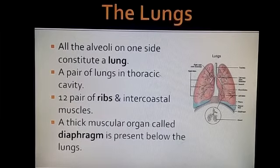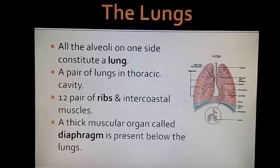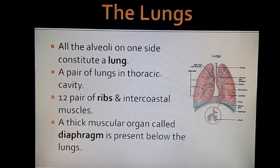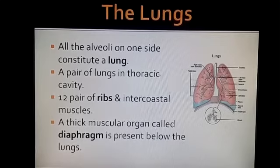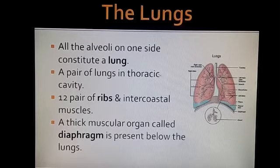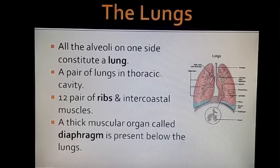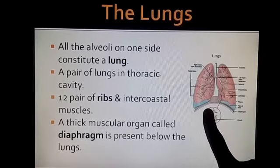There is a pair of lungs in our body, located in the thoracic cavity. The thoracic cavity is basically called the chest cavity. Special organs that protect the lungs are the ribs. One thing that is also important is the diaphragm. The diaphragm is a thick muscular organ and it is present below the lungs.